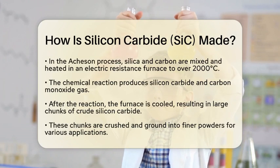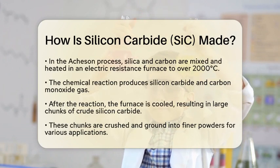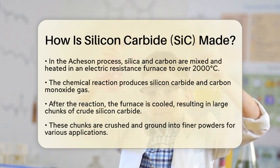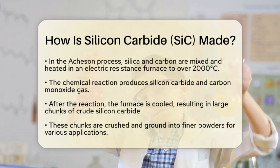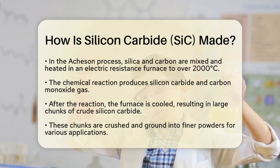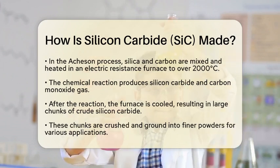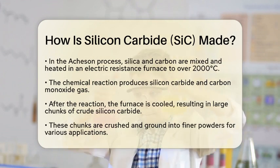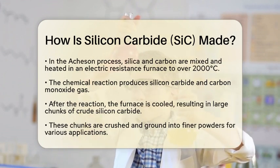During this reaction, the silica and carbon combine to form silicon carbide and carbon monoxide gas. The chemical reaction can be summarized as: silicon dioxide plus three carbon equals silicon carbide plus two carbon monoxide (SiO₂ + 3C → SiC + 2CO).